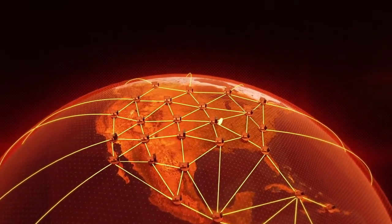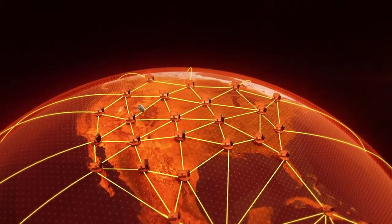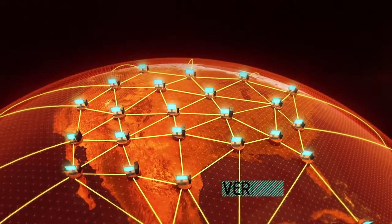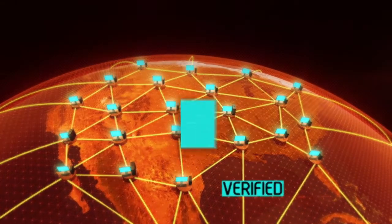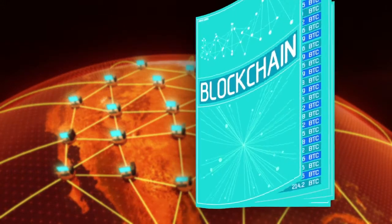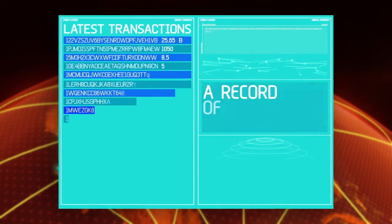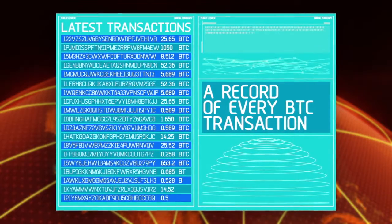When you send someone Bitcoins, the transaction is broadcast to the entire network. After it's verified, it's recorded in a public ledger called the blockchain. The blockchain contains a record of every Bitcoin transaction that has occurred since the system began,